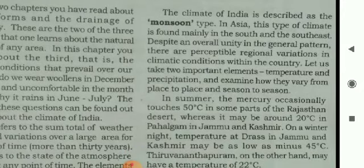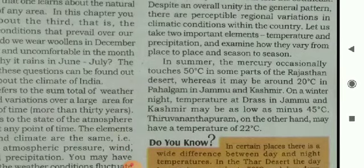The world is divided into a number of climatic conditions. Do you know what type of climate India has and why? The climate of India is described as the Monsoon type. In Asia, this type of climate is found mainly in the South and the South East. Despite an overall unity in the general pattern, there are perceptible regional variations in climatic conditions within the country.